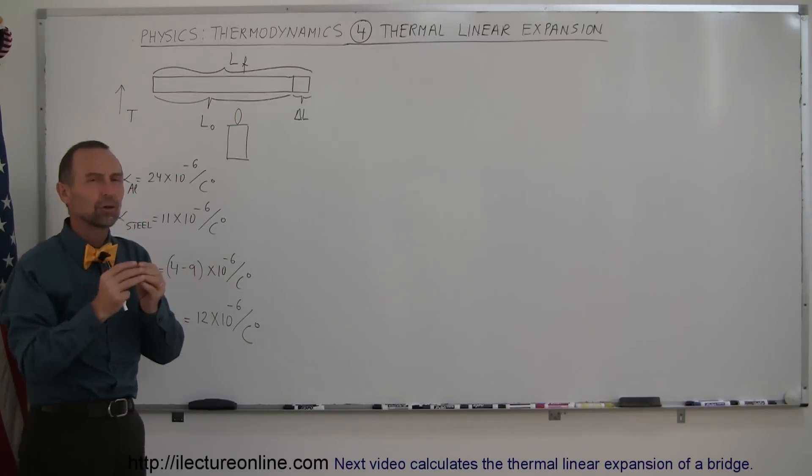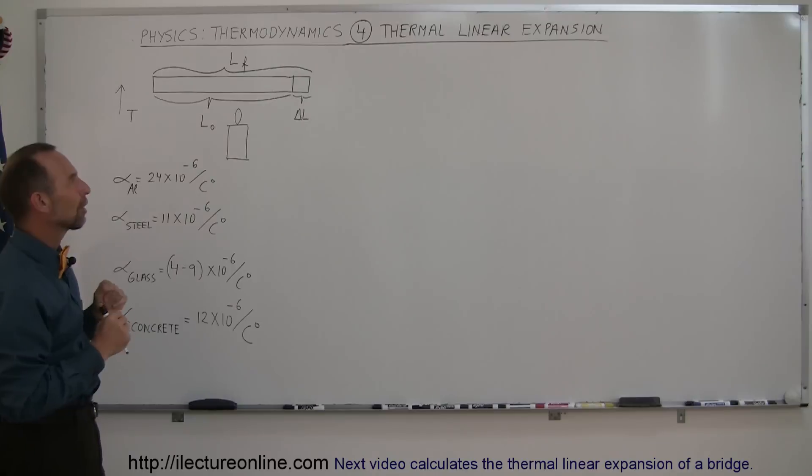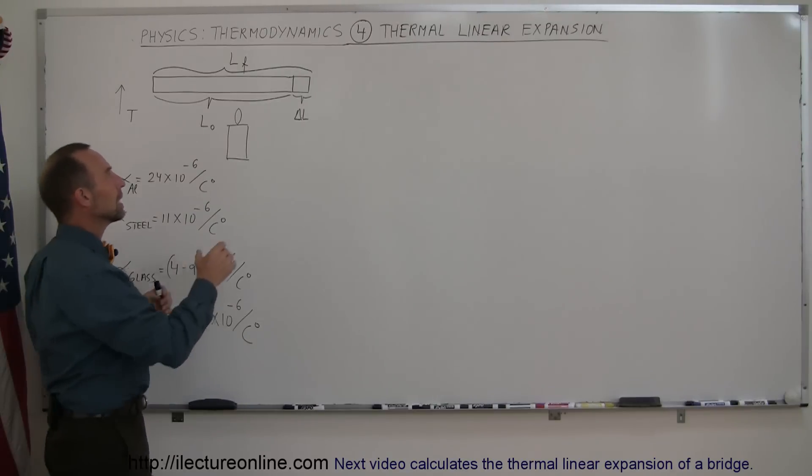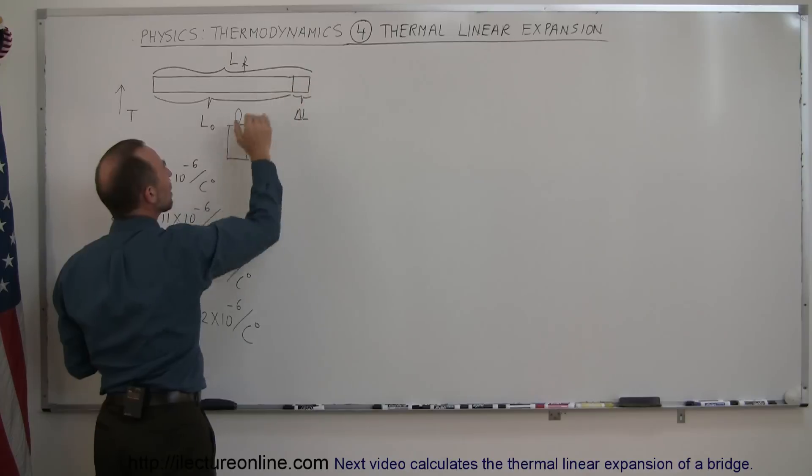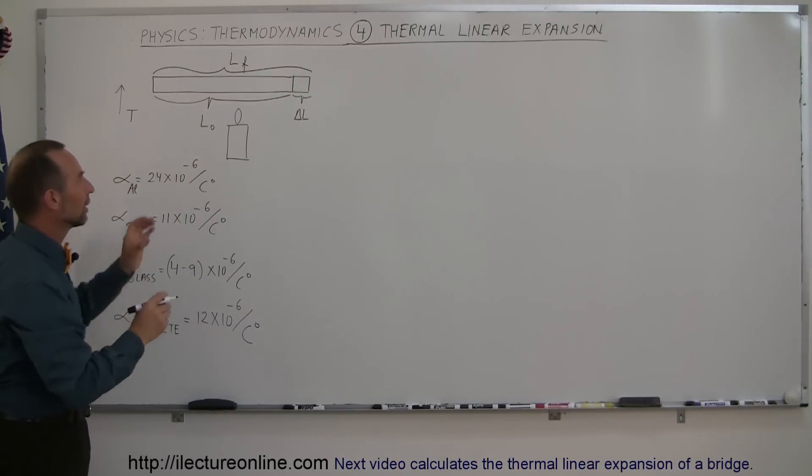Of course, if you have a linear object like this, it's only really noticeable in the direction of the length. So the length will increase by a small amount of ΔL, so that the new length will be L final, the initial length plus the change in the length.